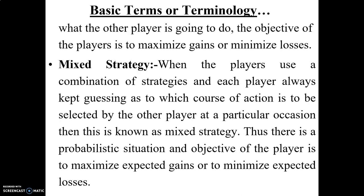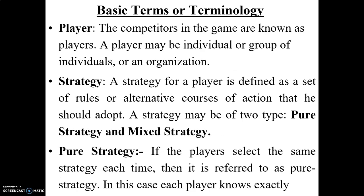There are some basic methods and terminology used in game theory. The first is the player — the competitors in the game are known as players. For example, in cricket there are two teams of eleven players each. A player may be an individual, a group of individuals, or an organization. The strategy for a player is defined as a set of rules or alternative courses of action that they should adopt.